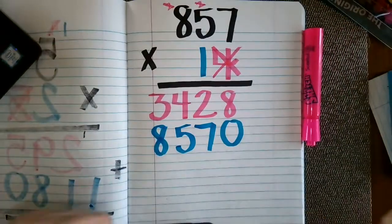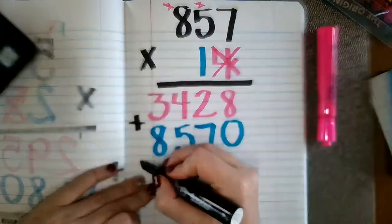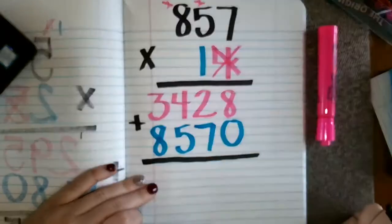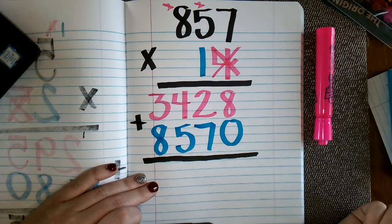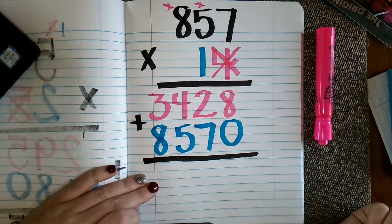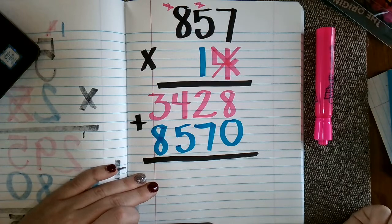So the last part is that we just need to find the sum of these digits to give us our overall product of 857 times 14. So if you'd like to pause at this point, you can pause and then unpause to check your answer with mine.